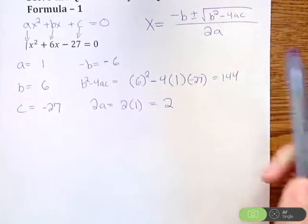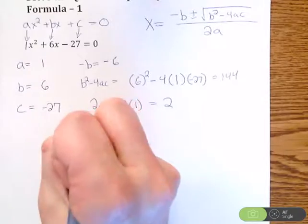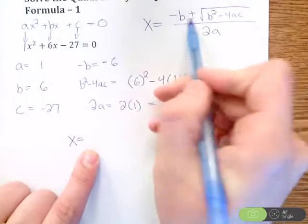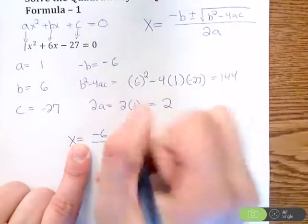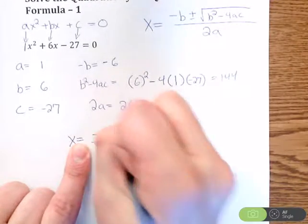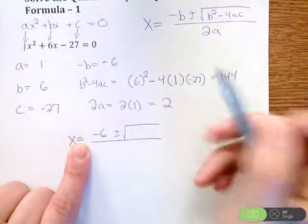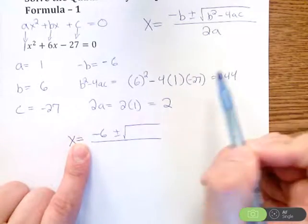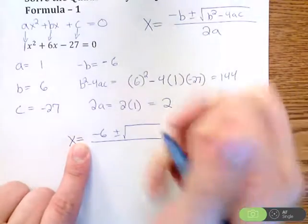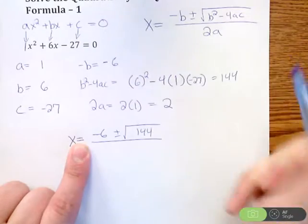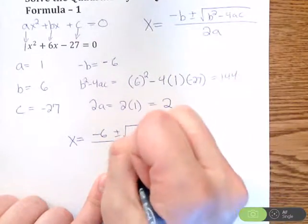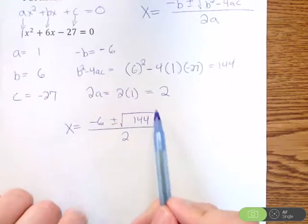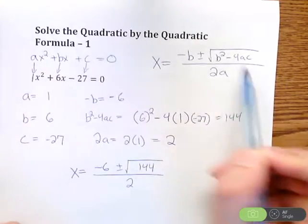So I'm going to use and reference my formula and put together what my answer is. So I need negative b first, which we said was negative 6. Next, I need a plus or minus. And then inside the square root, I need b squared minus 4ac, which we said is 144. And then in the denominator, I need 2a, which we said is 2. Now, this is a lot cleaner than what that looked like originally.